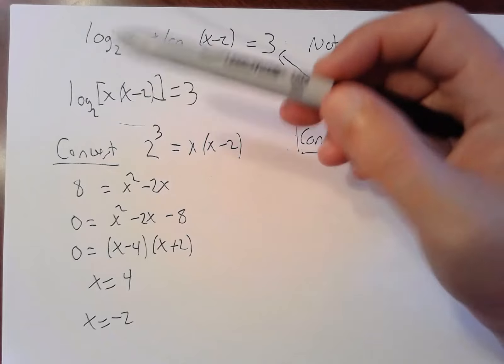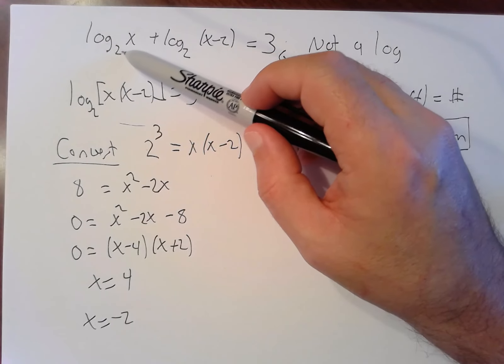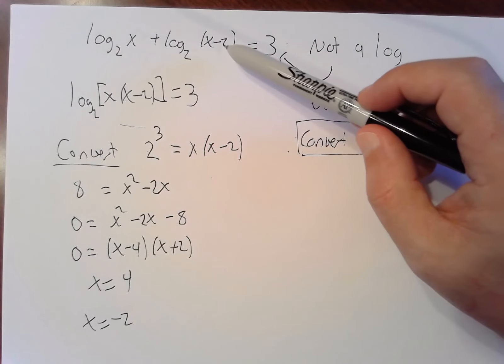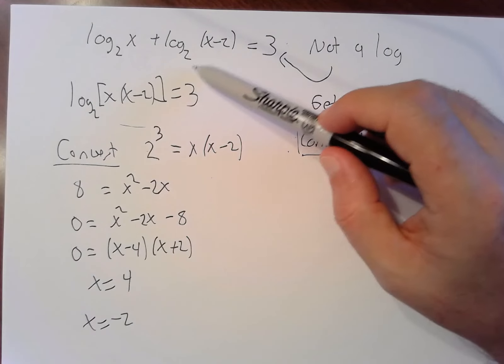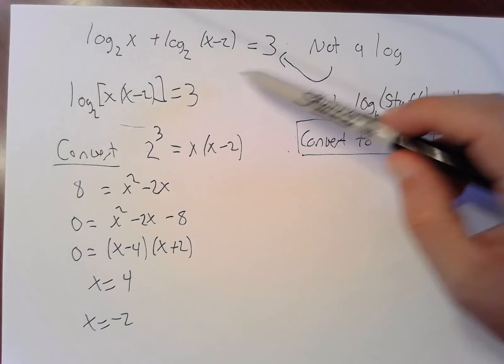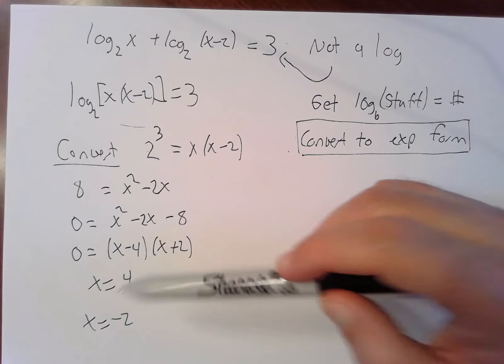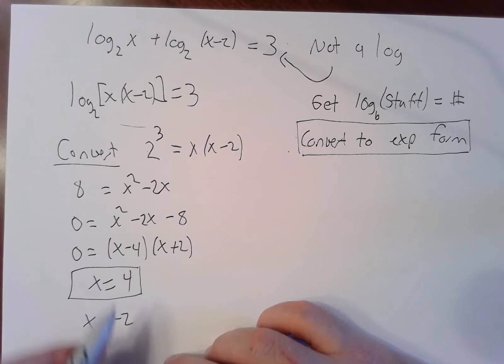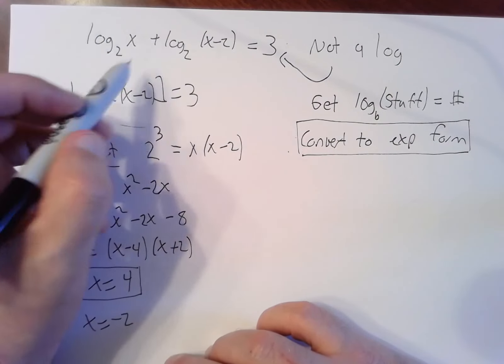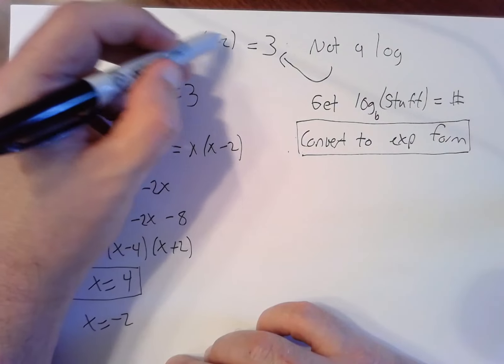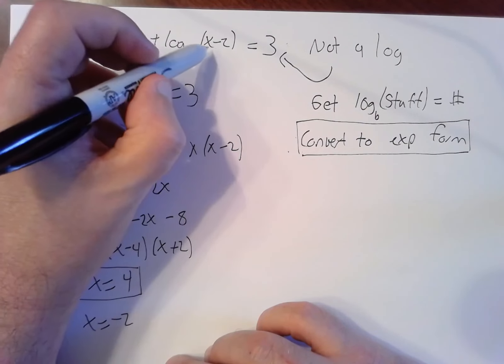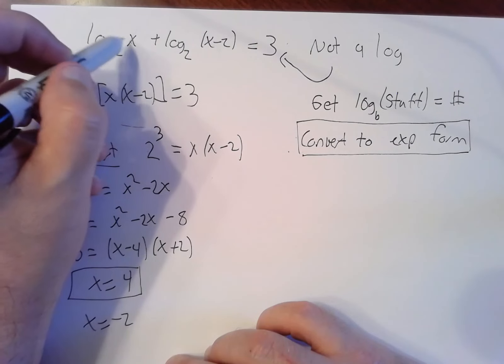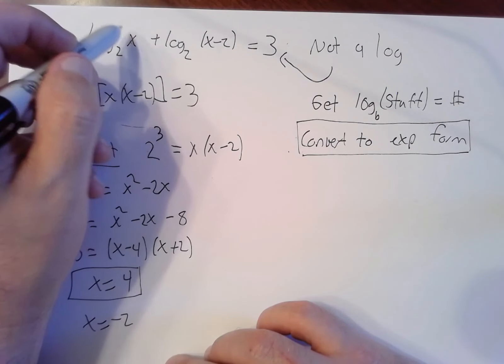Don't just assume the positive one works and the negative one doesn't. I don't care if x is positive or negative. I care if what's inside the logs is positive, negative, or zero. So if we try 4, I can do log base 2 of 4. 4 minus 2 is 2. If I plug in a 4, log base 2 of 4 is 2. Plug in a 4, 2 minus 2 is 2, log base 2 of 2 is 1, 2 plus 1 equals 3. Plugging in a negative 2, the problem is that I'll be taking log of a negative. Negative 2 minus 2 is negative 4, not allowed.